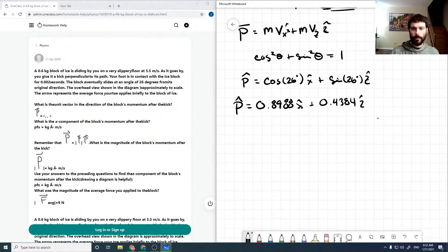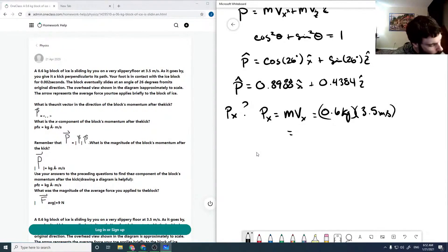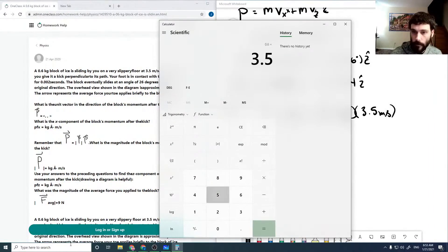So there's our p hat vector. And so it asks now what is px. We haven't done anything in the x direction so px is actually unchanged. So it's going to be the mass of the block times the x velocity of the block. And as we haven't changed that with our kick, it'll be just 0.6 kilograms times the 3.5 meters per second, which comes out to be 2.1 kilograms meters per second.